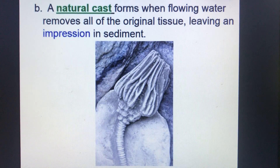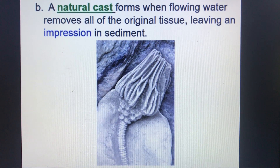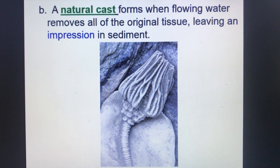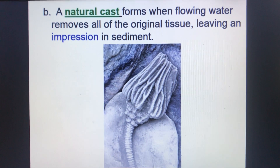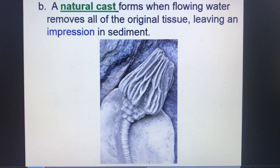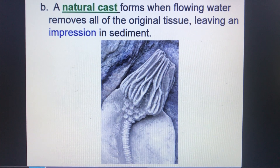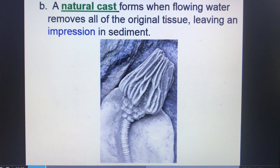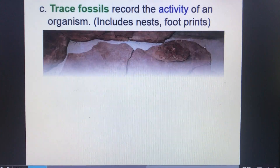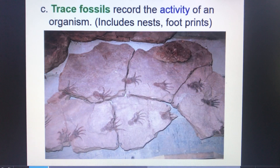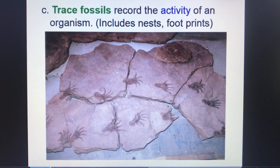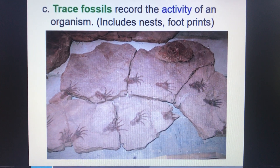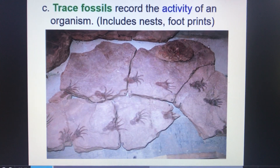The second type of fossilization is known as a natural cast, which is when water removes all the original tissue of the organism, leaving what's known as an impression, as seen here with ancient coral. Trace fossils actually record an activity of an organism, such as a nest or leftover footprints in the mud.